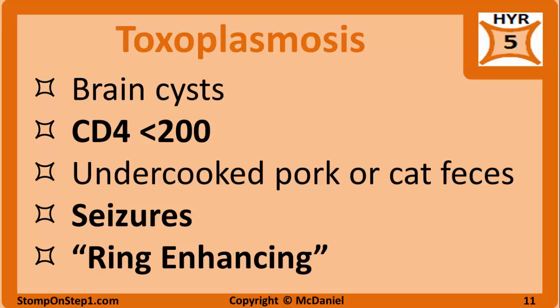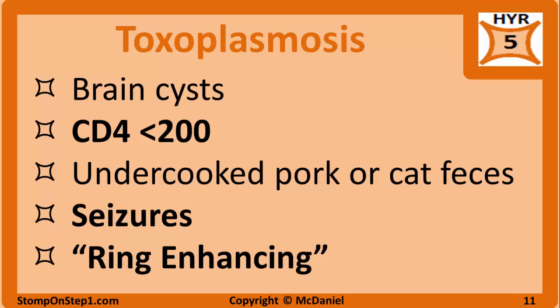Toxoplasmosis, aka Toxoplasma gondii, is a parasite that primarily causes brain abscesses or cysts in HIV patients with a CD4 T cell count less than 200. In the United States, this protozoa usually infects a human host after they eat undercooked pork or are exposed to cat feces. Infections are usually asymptomatic and then can become reactivated when the patient becomes immunocompromised. Toxoplasmosis can present as a headache with a wide variety of neurological deficits, but seizures are most common. On MRI or CT scan, the lesions present as ring-enhancing — a low-density circular area surrounded by a white, high-density rim.